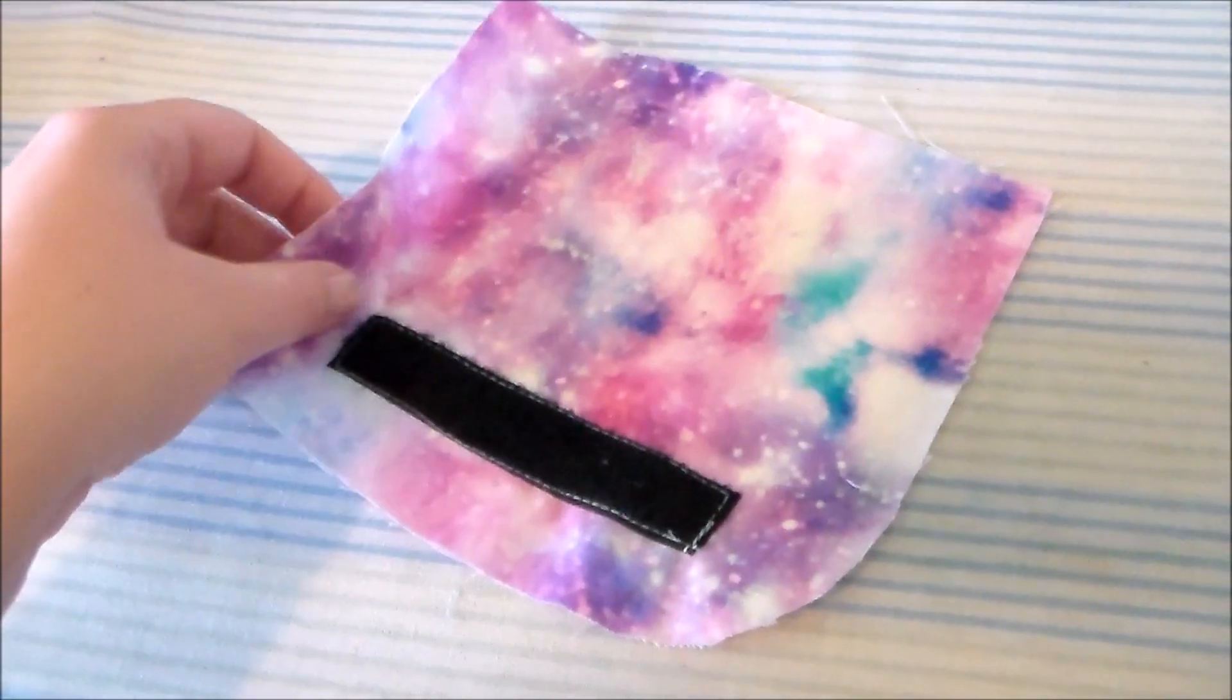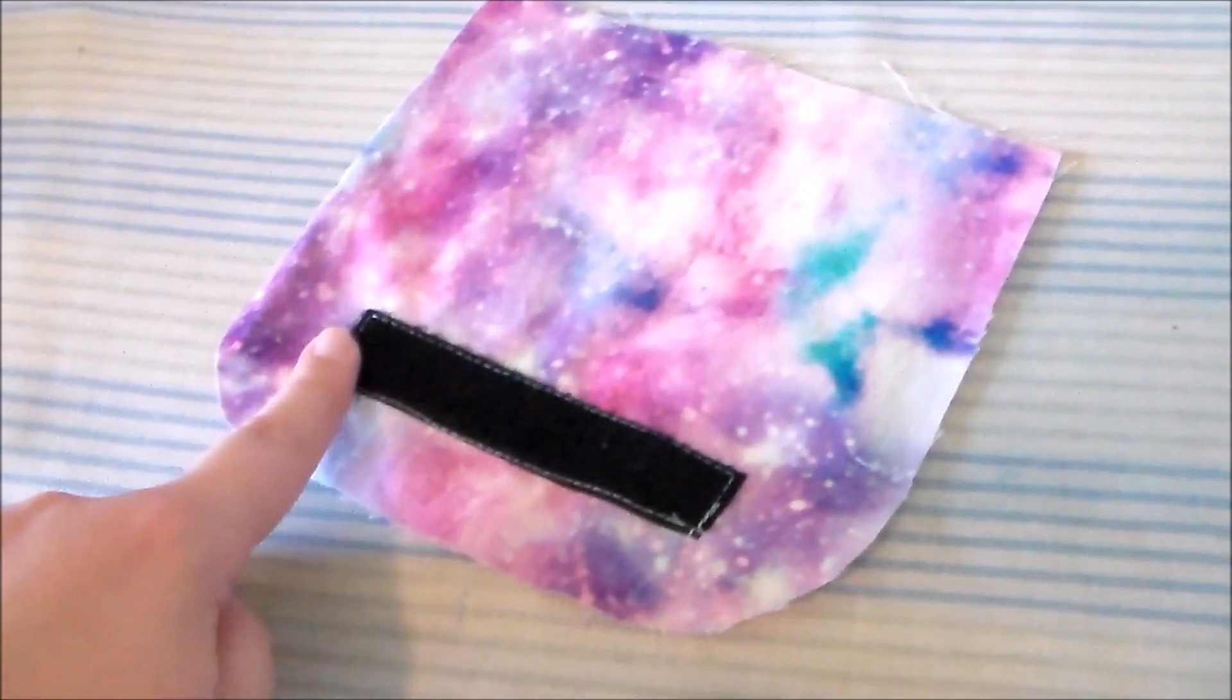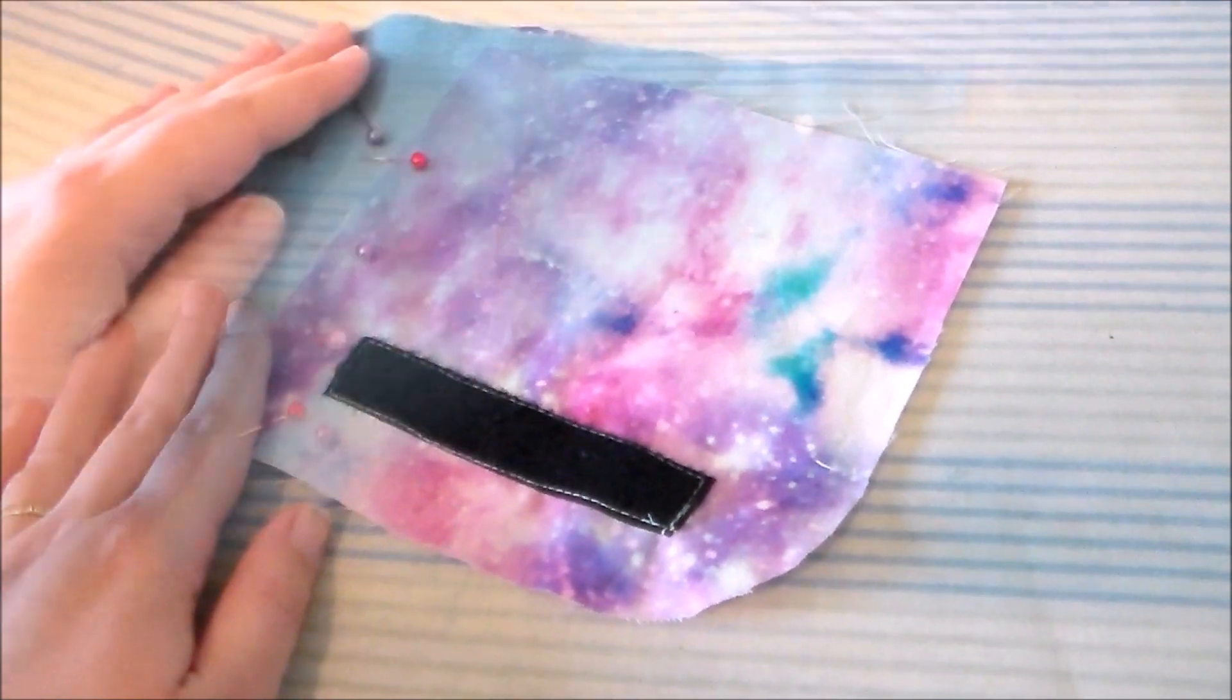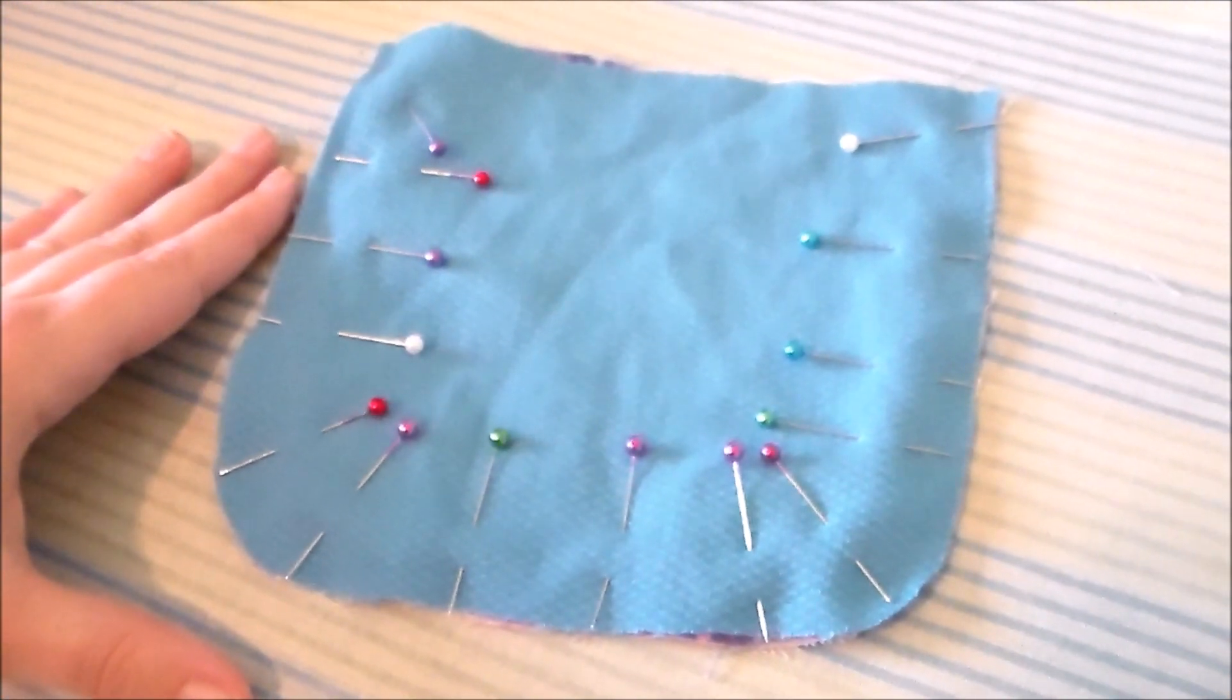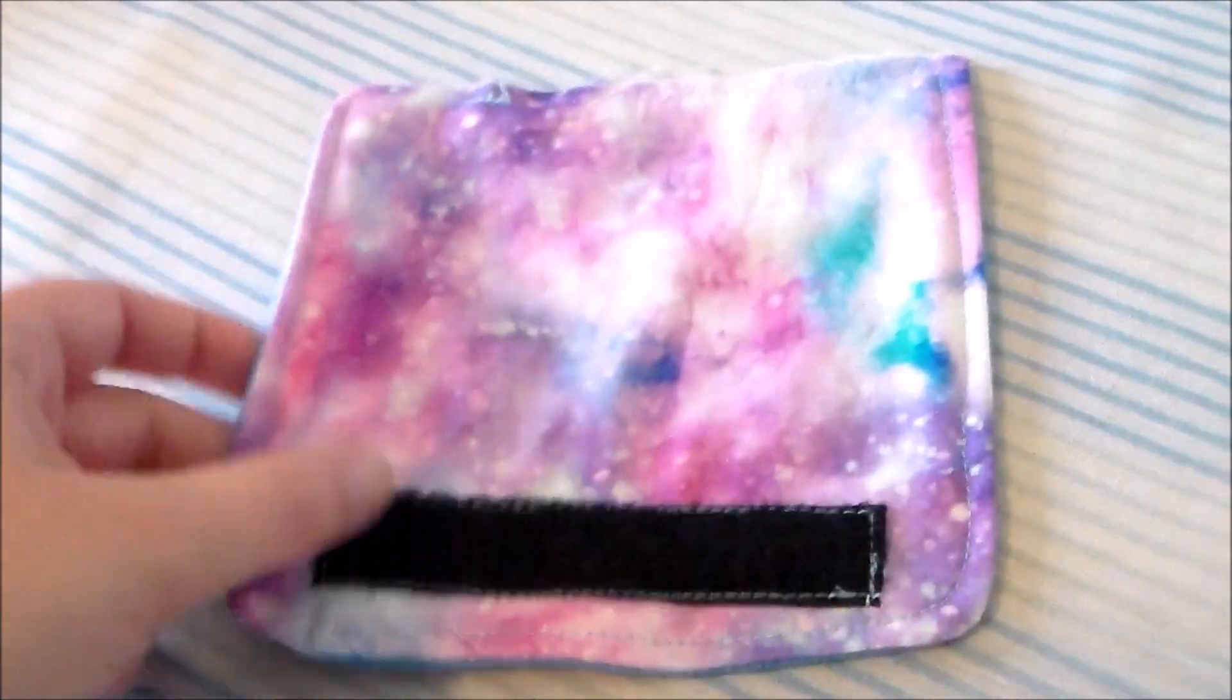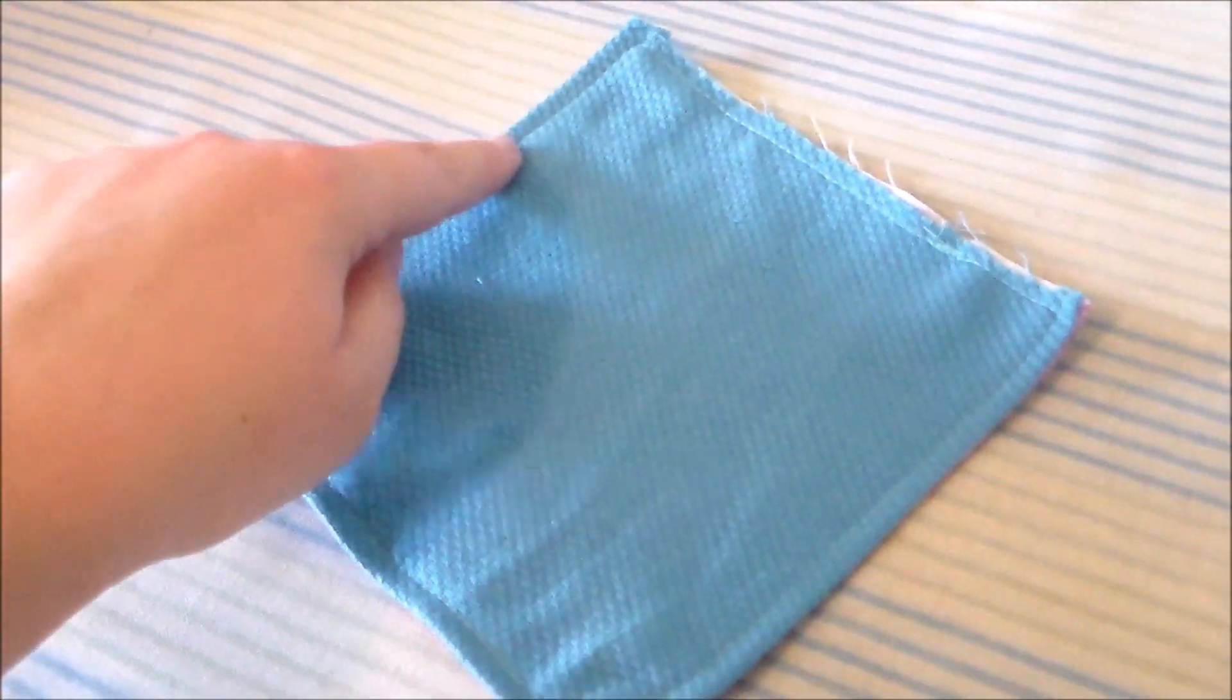To make the flap of the pouch we're going to start by cutting the lining piece and we're going to apply the opposite side of the velcro onto this. Putting right sides together, sew the lining to the base flap material. Turn the flap right side out and top stitch all along the edge.